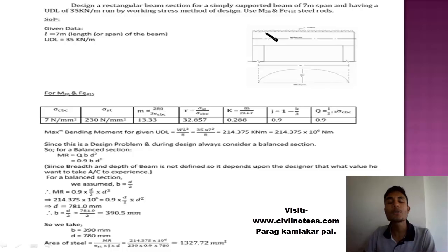Here the UDL is provided, that's why I am taking the UDL bending moment which is given by WL square by 8. I got the value in kilonewton meter, so I convert it to newton millimeter by multiplying by 10 raised to the power 6. This is about step number one.